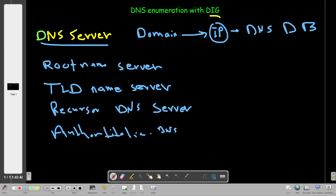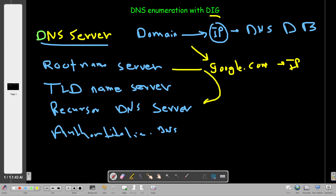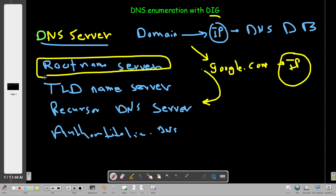Which DNS server you use depends on the configuration. For example, if you have a local DNS server and it has google.com's IP address stored, it will use the recursor DNS server. If the local DNS server doesn't have the IP address, it will forward the query to another DNS server. Root DNS servers at the very end have the answers for all domains.